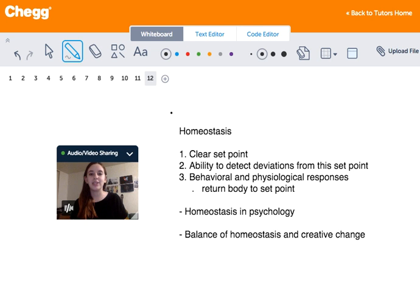So to break it down into basics, homeostasis involves three key features. So it has to have a clear set point, an ability to detect deviations from this set point, and behavioral and physiological responses that return this body to the set point.